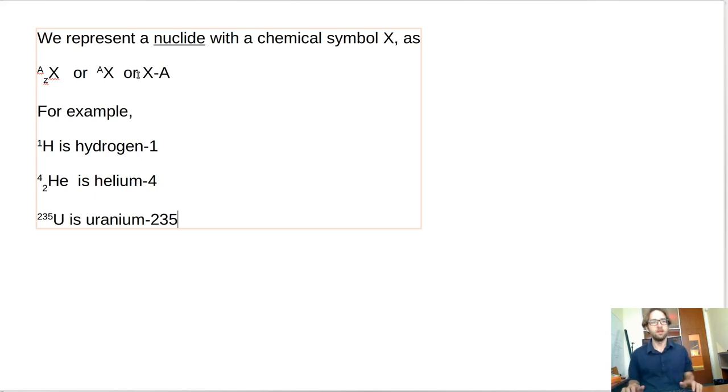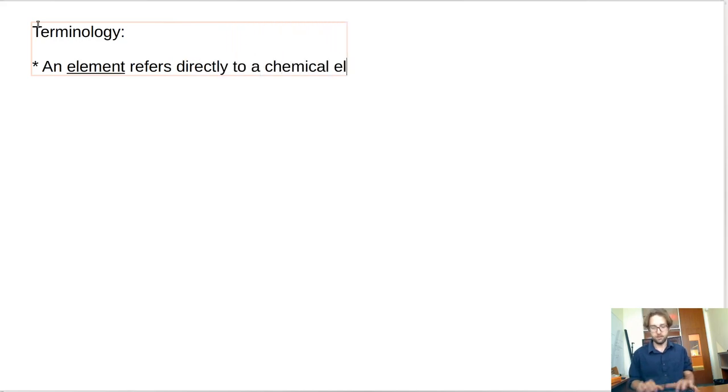So let's go ahead and move on with some important terminology. Now a lot of this stuff is easy to get wrong, and people especially members of the public sometimes get it wrong, and so it's important in this class to be very clear and specific about what's going on. So let's go ahead and say that an element refers directly to a chemical element. So we won't use the word element in any other context other than as a chemical element.